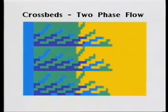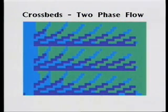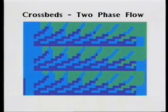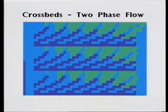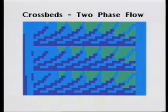In this waterflood of the cross-bed model, we see how the oil and water distribution is strongly affected by the sediment structure. This is because of the capillary forces. The net effect is that oil becomes trapped in higher permeability zones as it is unable to pass through surrounding low permeability zones. The amount of trapping depends on the details of the structure as well as the flow rates and fluid properties. We can scale up these effects using pseudo-relative permeability functions, which we call geopseuds.